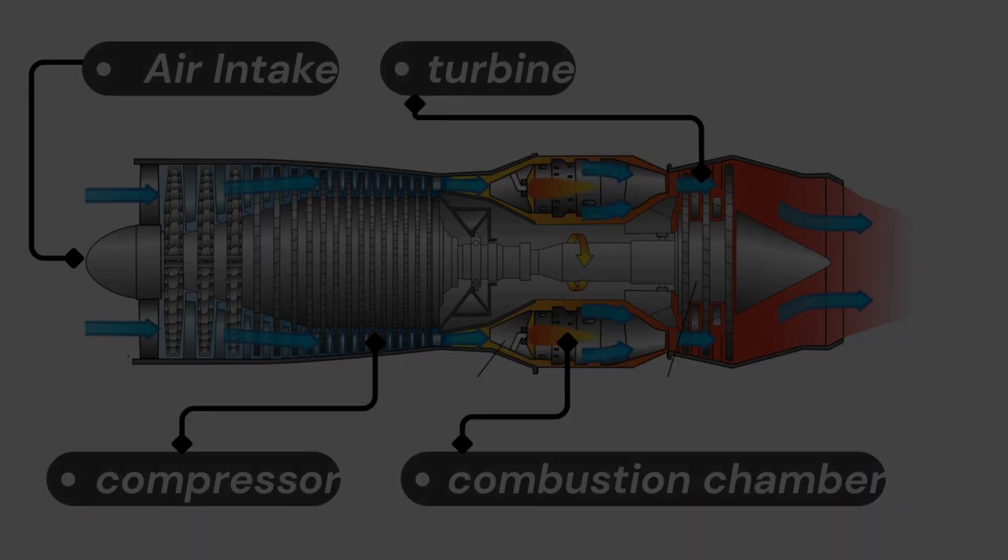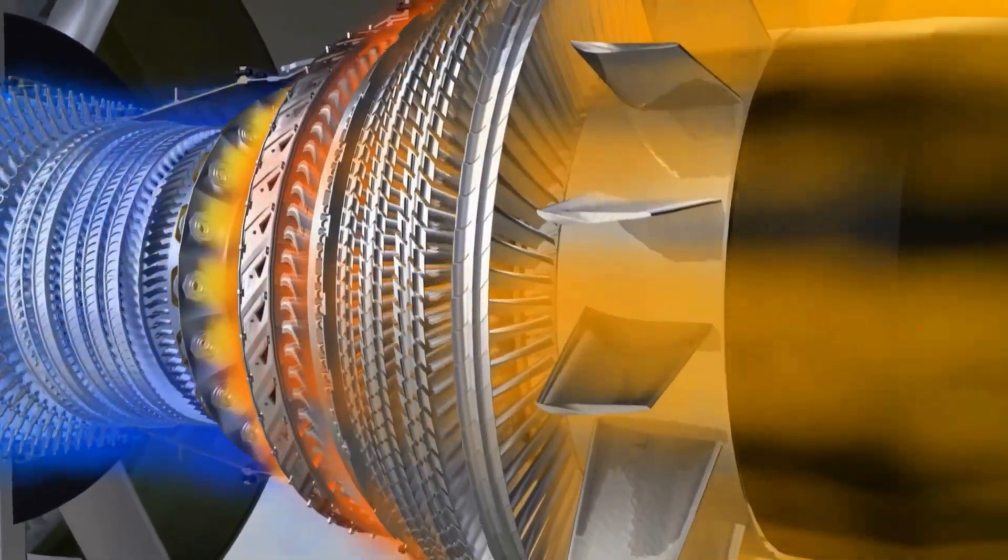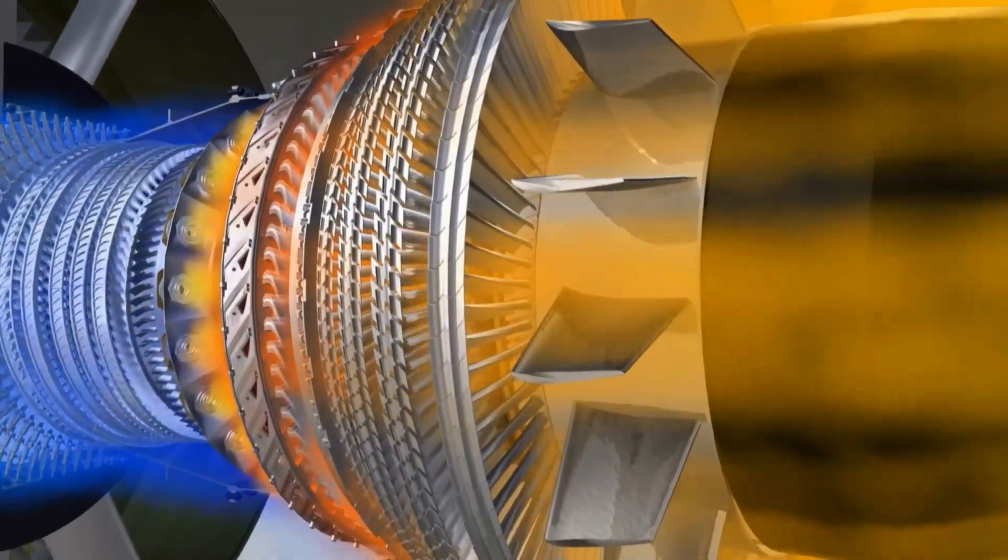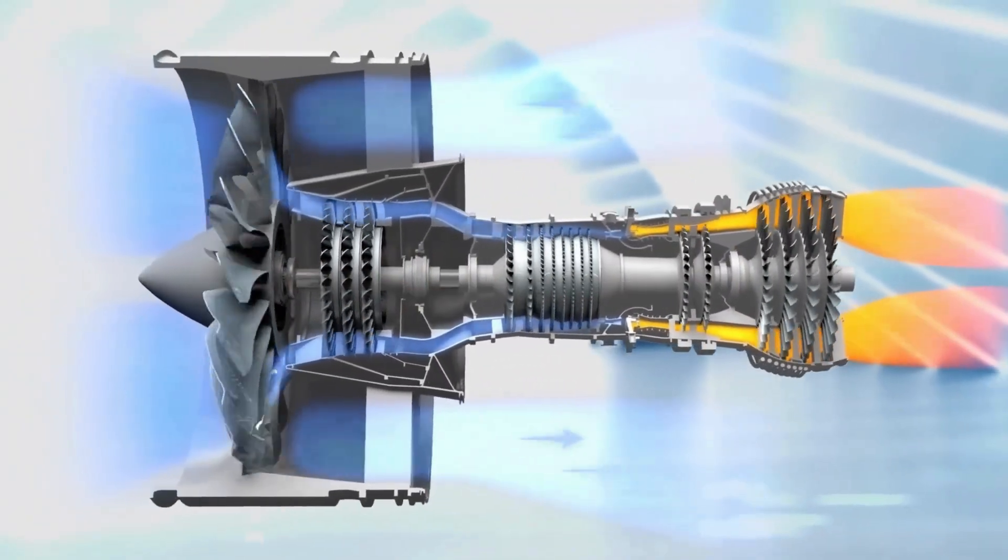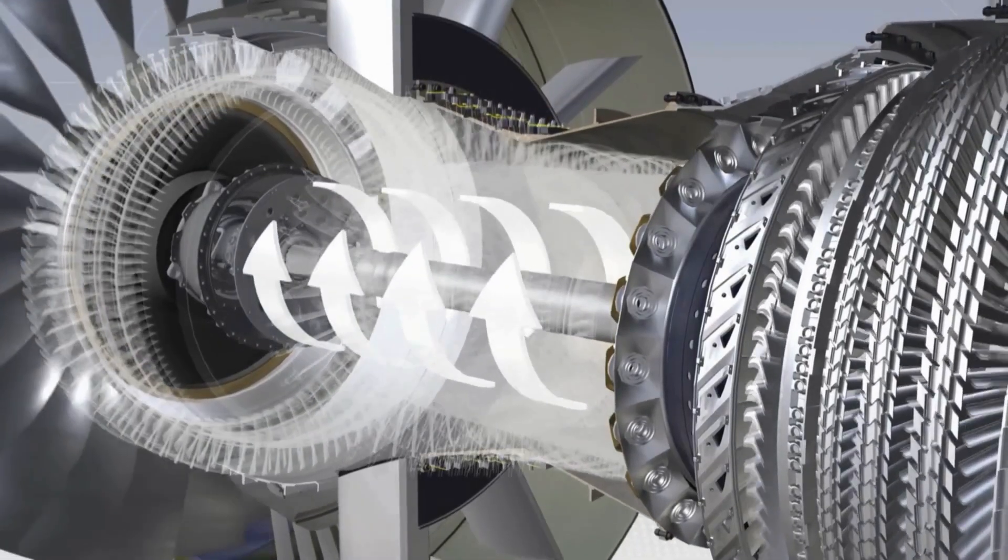These gases rush into the turbine, spinning its blades at incredibly high speeds. That spinning power isn't wasted - it's used to drive the compressor up front, creating a beautifully efficient energy loop.